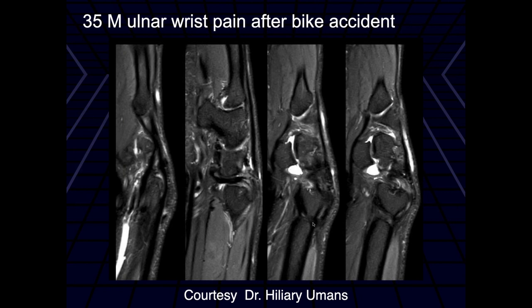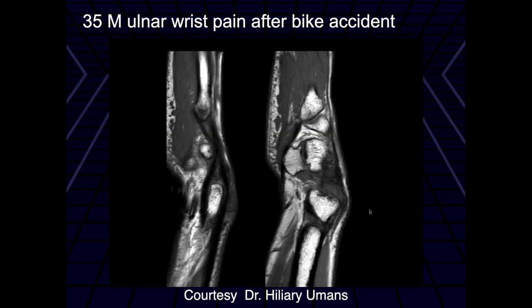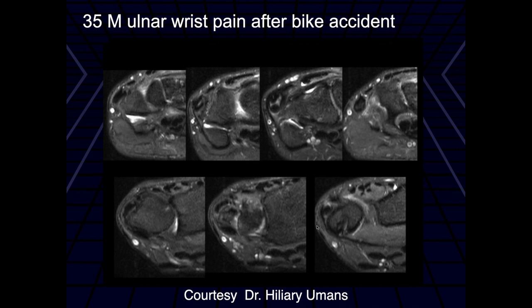So what we have here looks like a fracture, but this is actually a bone tunnel where they had a reconstruction of the distal radial ulnar joint space. This is the bone tunnel, and there's a graft going into the tunnel here, fixed into the tunnel in the ulna.